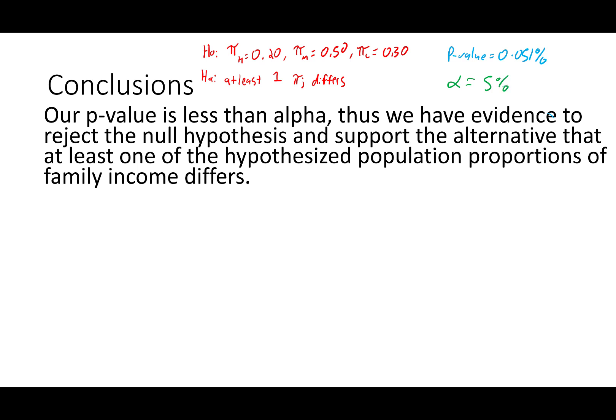In our previous lecture videos, we were testing the claim that the proportion of high-income families equals 20%, middle-income families 50%, and low-income families 30%. That was our null hypothesis. The alternative hypothesis states that at least one of those hypothesized proportions differs. We found the p-value to be 0.051%, and comparing that to a standard alpha level, our p-value is less than alpha, which, just like any other hypothesis test, gives us evidence to support the alternative — that at least one of those hypothesized population proportions of family income differs.